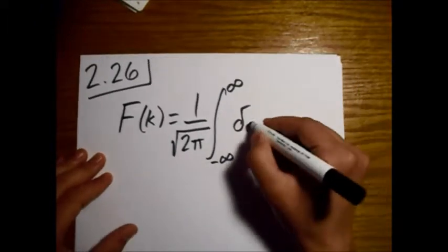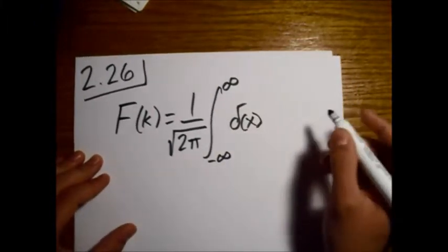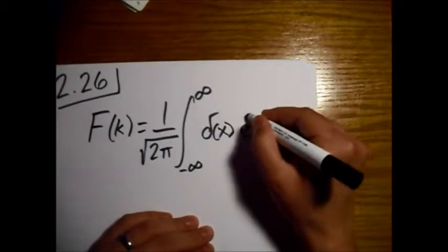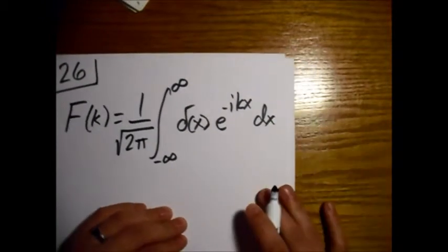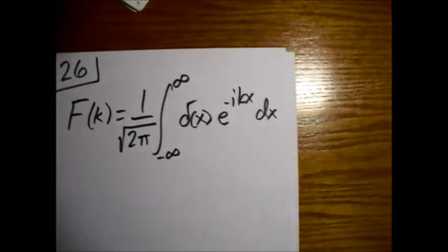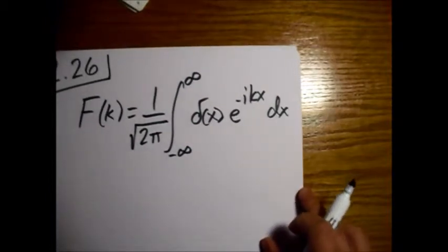Here's our Dirac delta function, and then e to the minus ikx dx. Alright, so this is our Fourier transform.